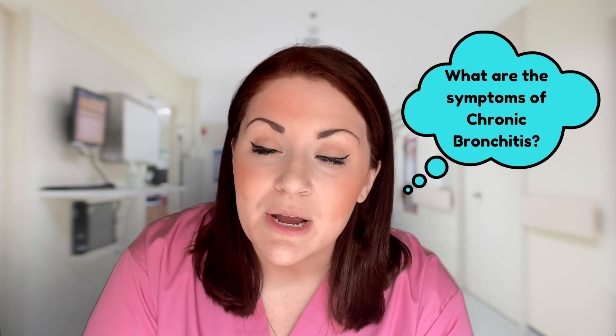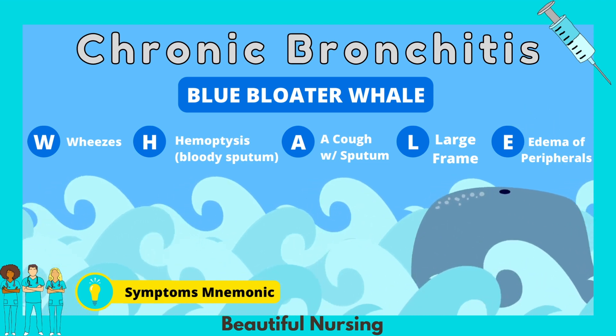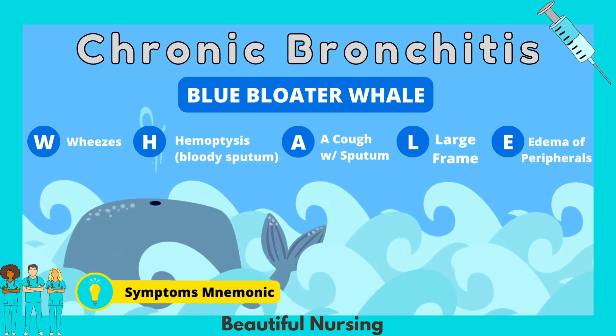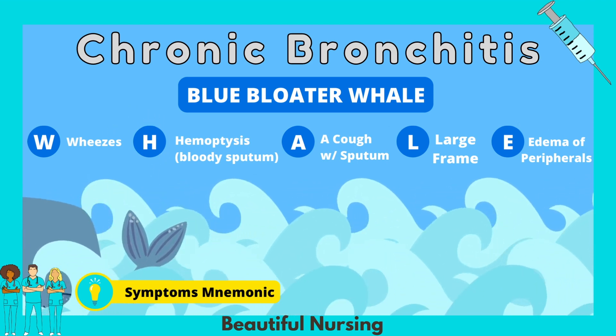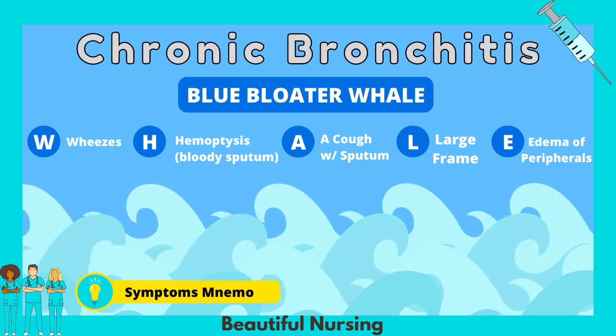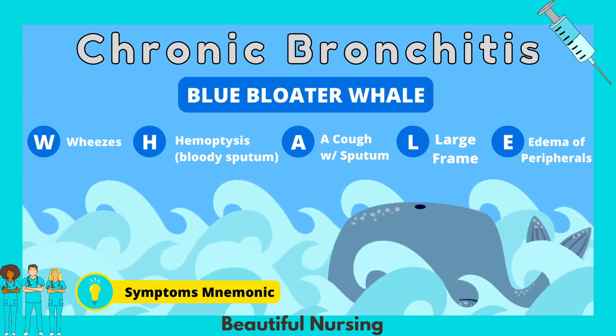The symptoms of the chronic bronchitis part of COPD can be remembered with the mnemonic Blue Bloater WHALE: W for wheezes, H for hemoptysis, A for a cough with sputum (mucus production), L for a large frame or obesity, and E for edema of the peripherals.